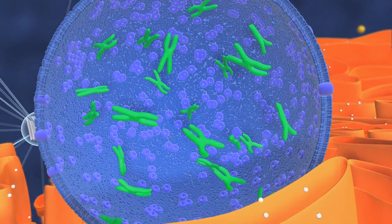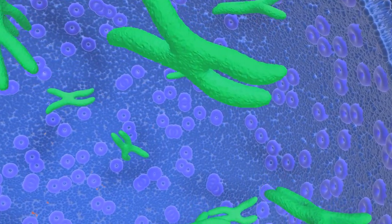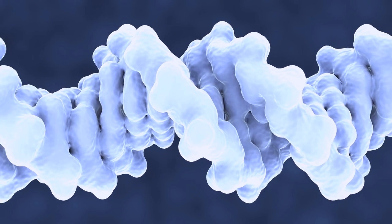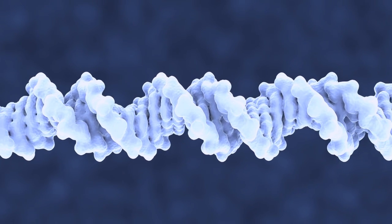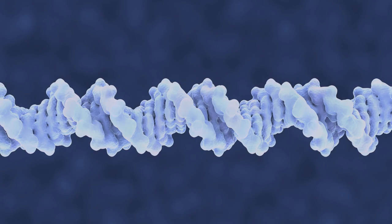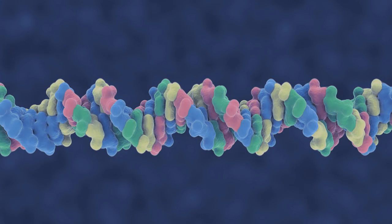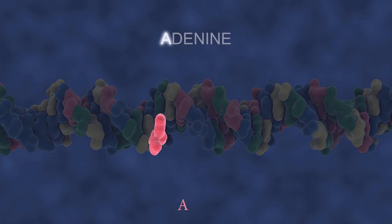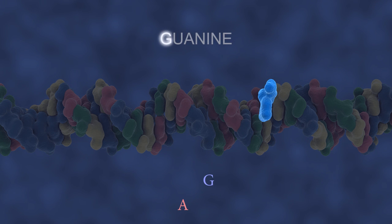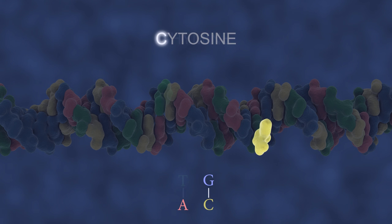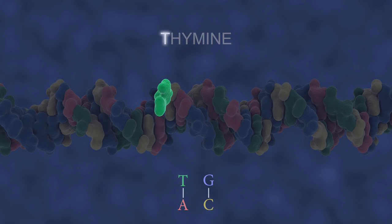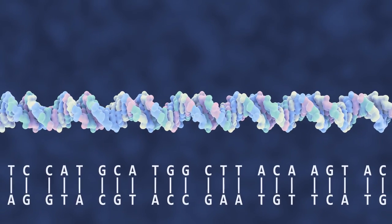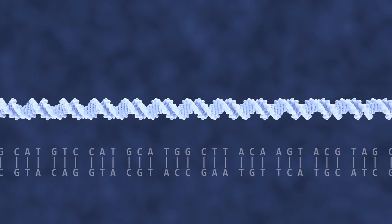Zoom in on the DNA and you see that it consists of two strands twisted together to form a helix. Although they are very long, each strand of DNA is actually made up of only four different building blocks known as bases: adenine, guanine, cytosine and thymine. The order of these bases determines the function and genetic information in the DNA.